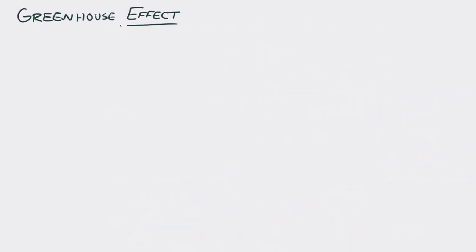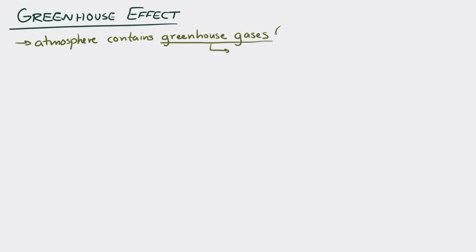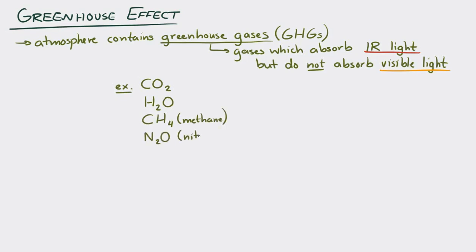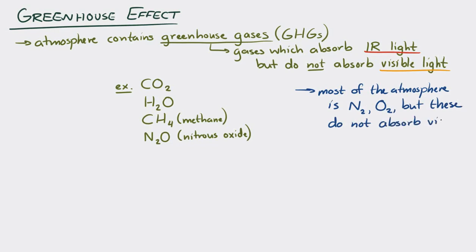The Earth's atmosphere contains many different gases, but one category is greenhouse gases — or GHGs — which absorb infrared light but do not absorb visible light. Examples of greenhouse gases are carbon dioxide, water vapor, methane, and nitrous oxide. Most of the atmosphere is diatomic nitrogen and diatomic oxygen, but those don't absorb either visible or infrared light in any great quantities, so we set those aside.